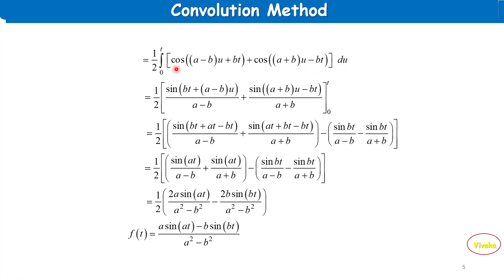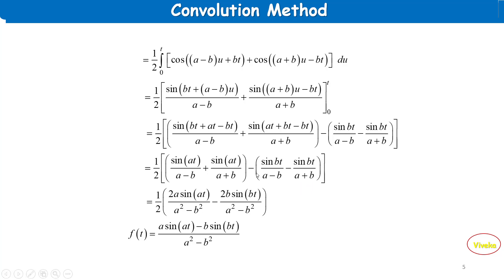Integrating: sin term divided by (a−b) and sin term divided by (a+b). Applying upper limit t and lower limit 0: we get sin(bt)/(a−b) − sin(bt)/(a+b), simplified as (1/2)[ sin(at)/(a−b) + sin(at)/(a+b) − sin(bt)/(a−b) − sin(bt)/(a+b) ].